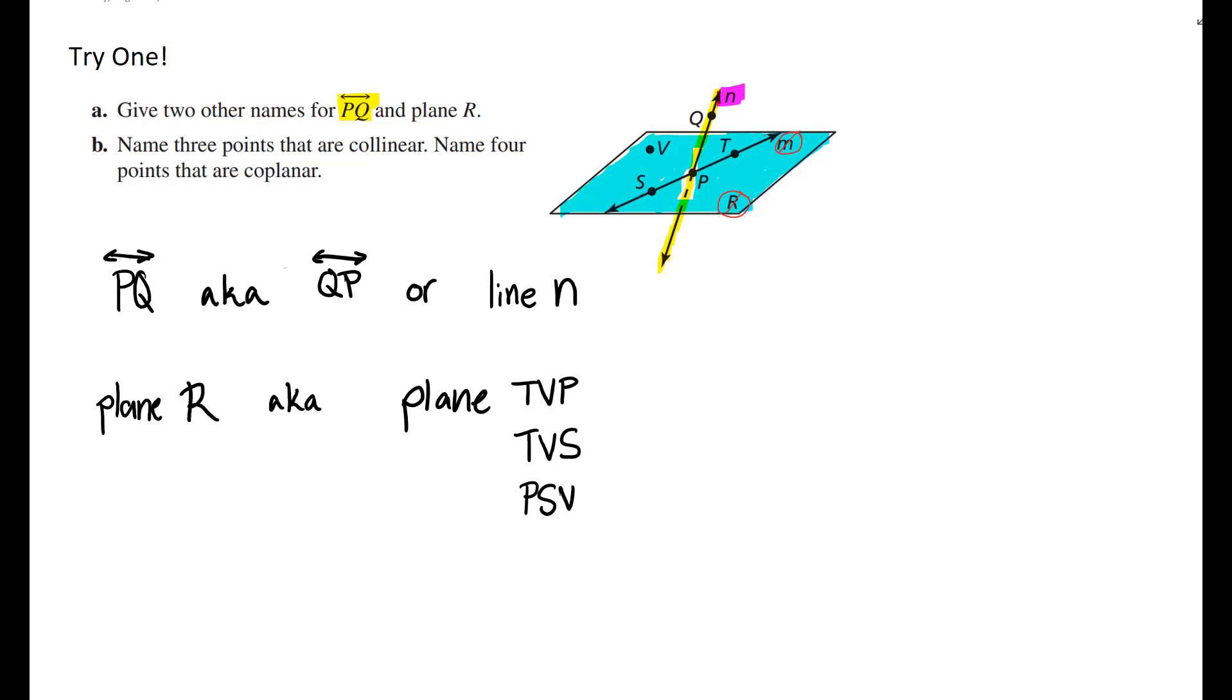So the only options you have are the points that actually are on the plane, which would be T, P, S, and V. But T, P, S cannot all three be used at the same time. V always has to be used because T, P, and S are all on the same line. They are collinear.